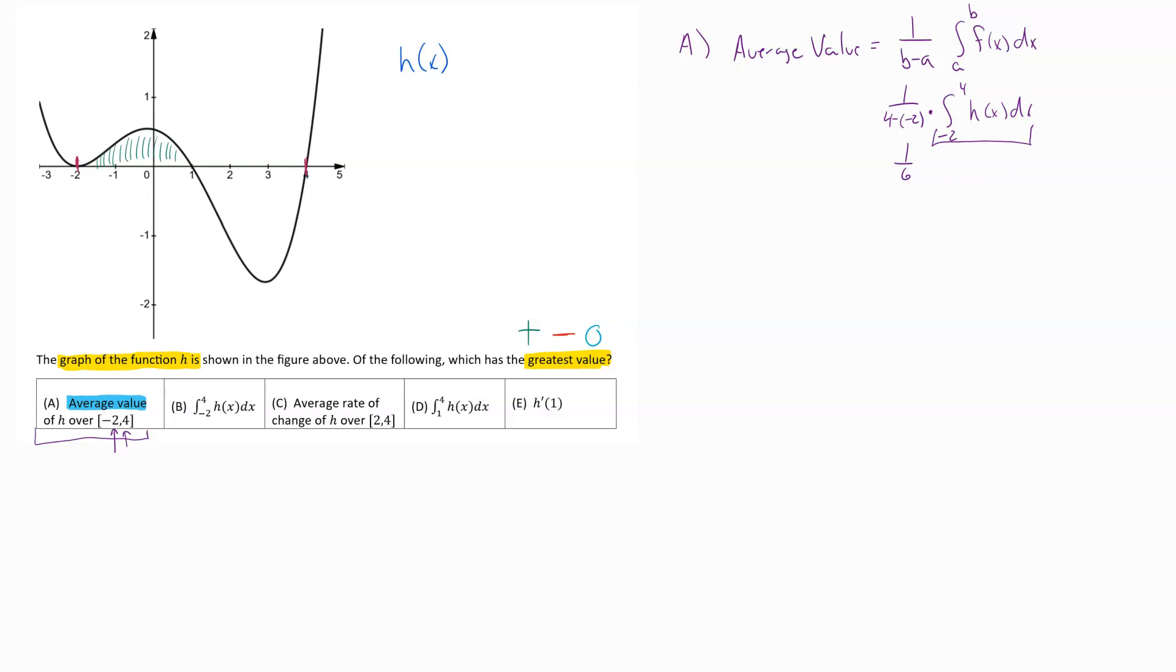And so if I add all of those things up, what I know is that I'm going to end up with more negative area than I am positive. So I don't know what the actual value of that integral is, but I know that the answer to it is going to be a negative number. And a negative number times one sixth is going to end up giving us a negative number out. So we know that option A right now is negative.